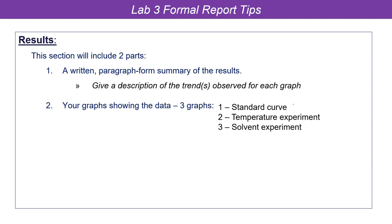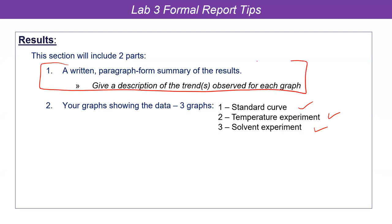So you're going to have three graphs: a standard curve — that's the first part of the experiment — with absorbance on one axis and concentration on the other. You're also going to have a graph for the temperature experiment and a graph for the solvent experiment. The other part of the results is a written component, basically a paragraph. Some people like to do one paragraph, some like to do three — one for each graph. There's not really a lot to say about each graph in the results section; this is a bare-bones summary of the results.